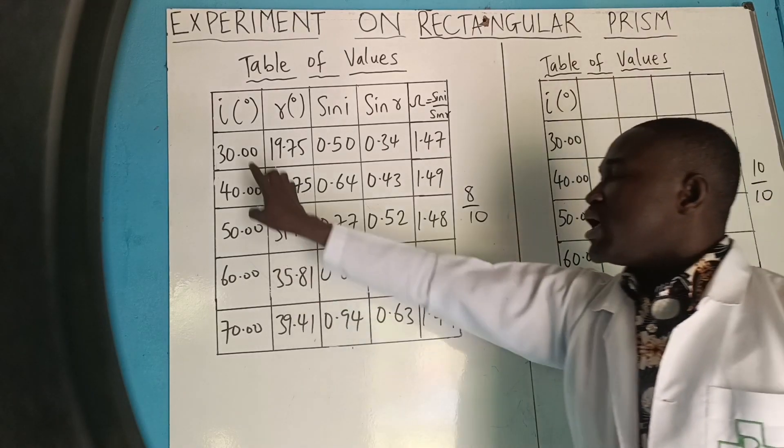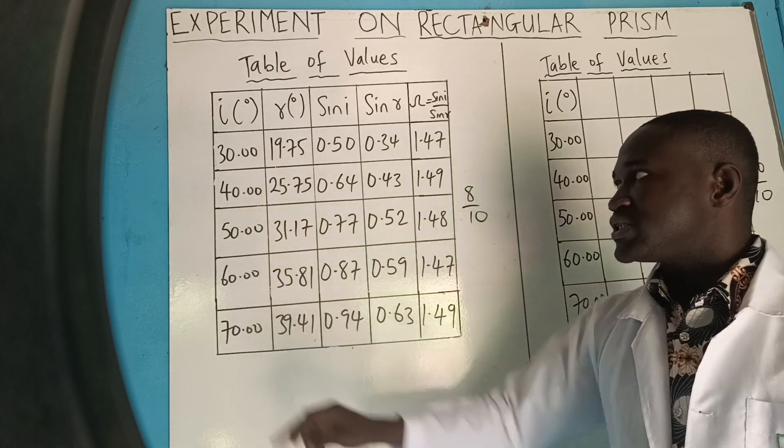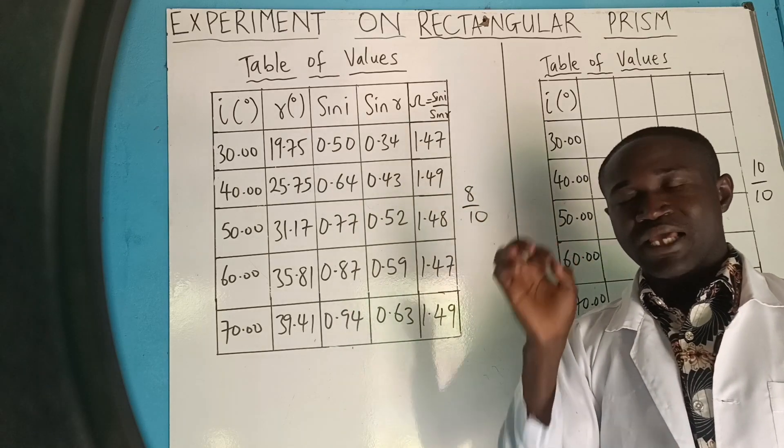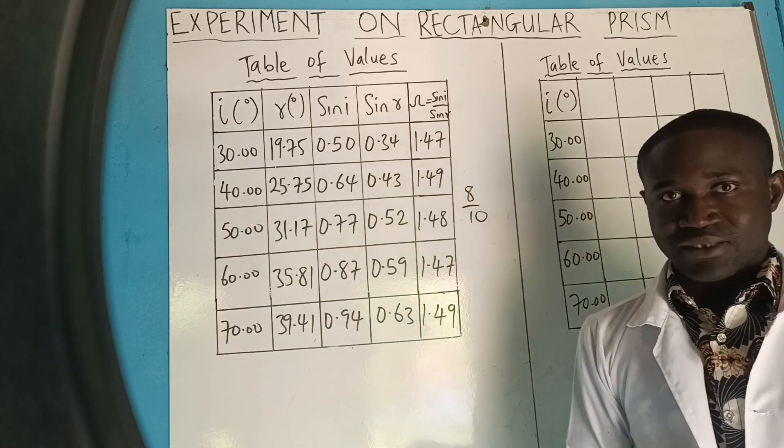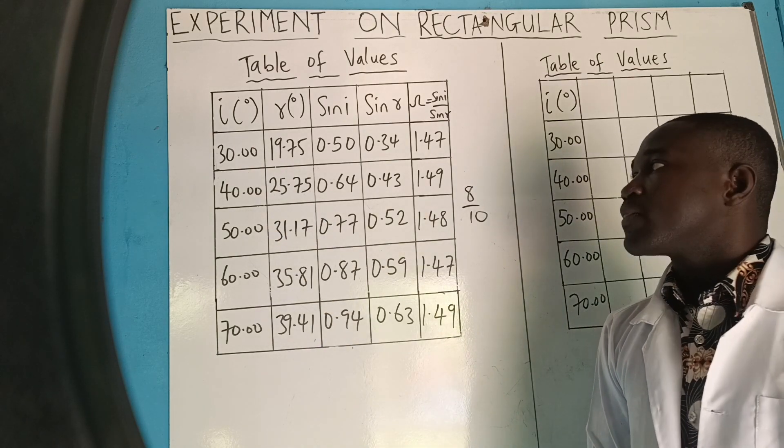Let's see the difference. In this column, we have angle of incidence: 30, 40, 50, 60. Can you get 30 degrees with your protractor? Yes. Can you get 40 with your protractor? Yes. 50 with your protractor? Yes. Can you get that one from your protractor? Yes. You can do that.